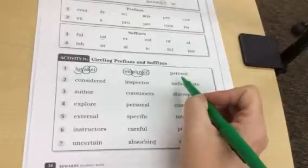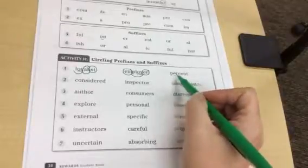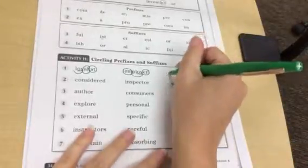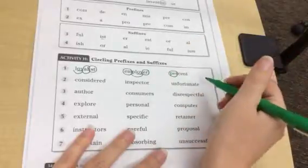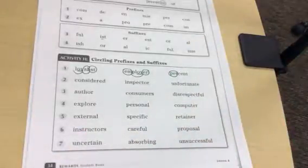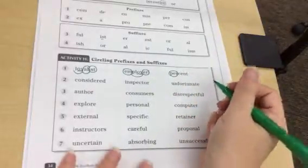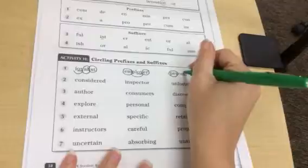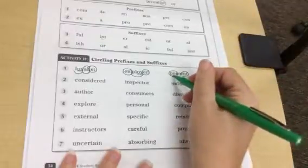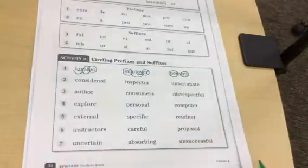Alright, the next one. Per. Oh yeah, that is a prefix. And let me look at my chart to see if E-N-T is one. So now I have PER-CENT. Per-CENT.